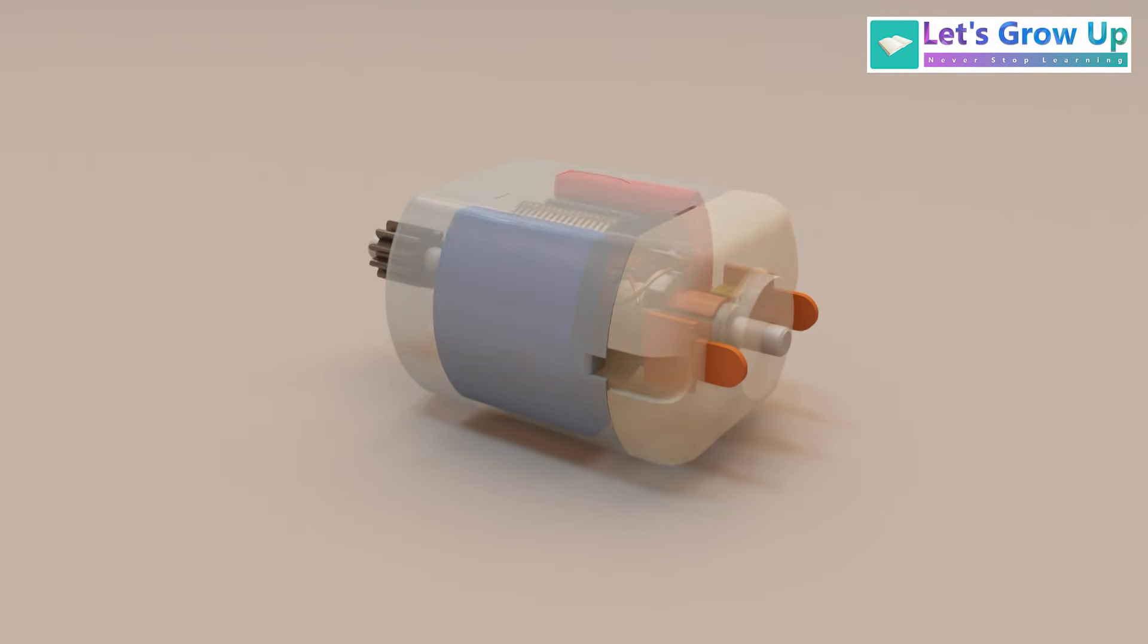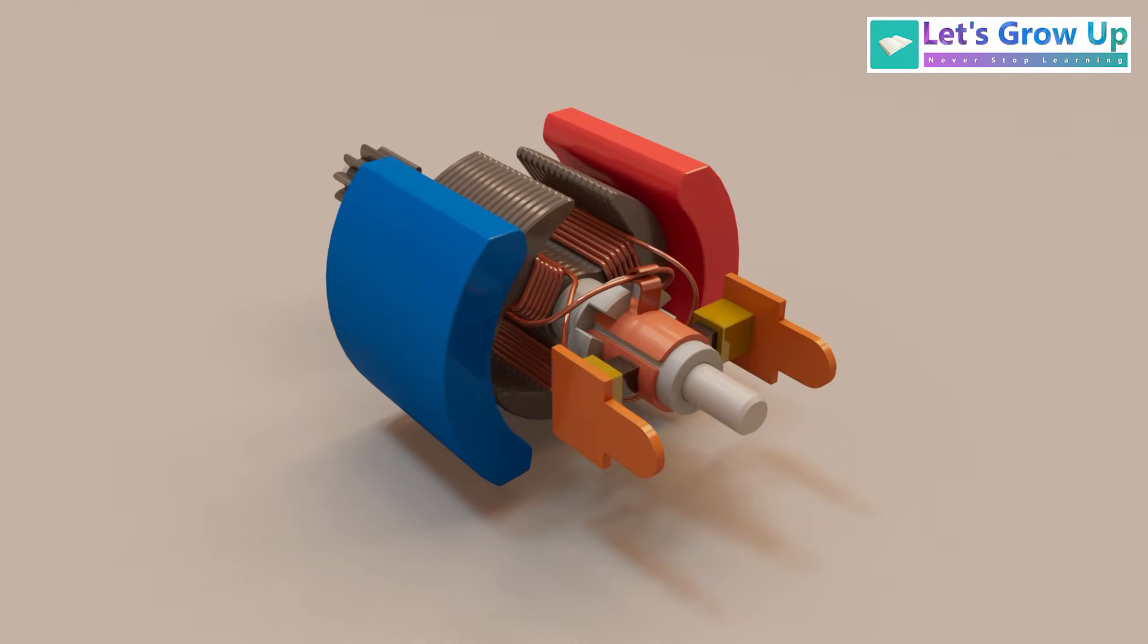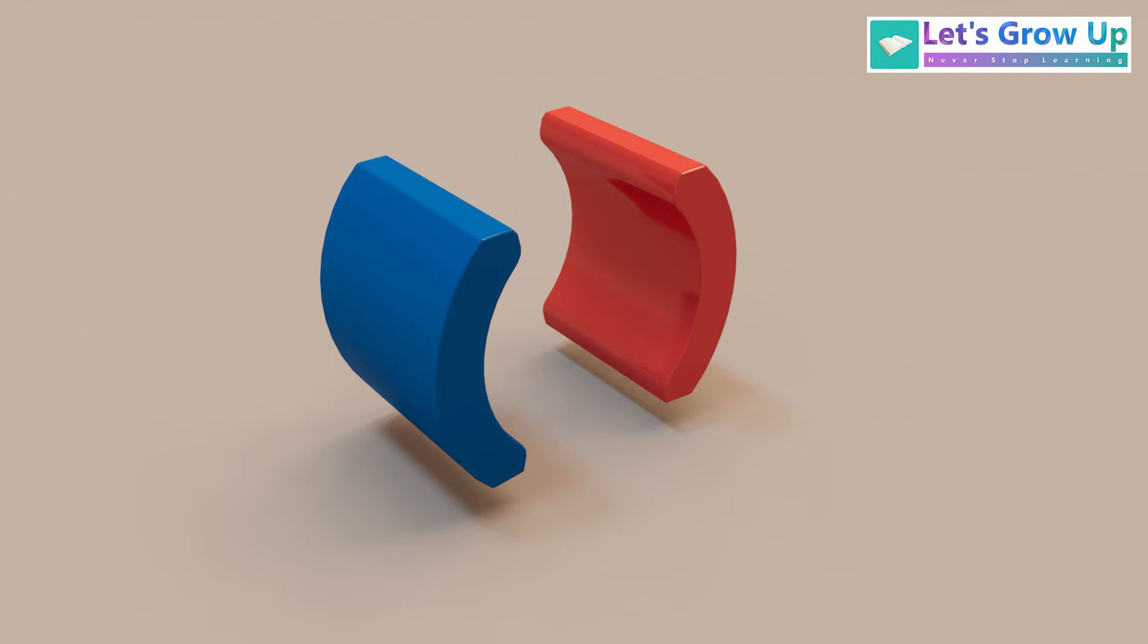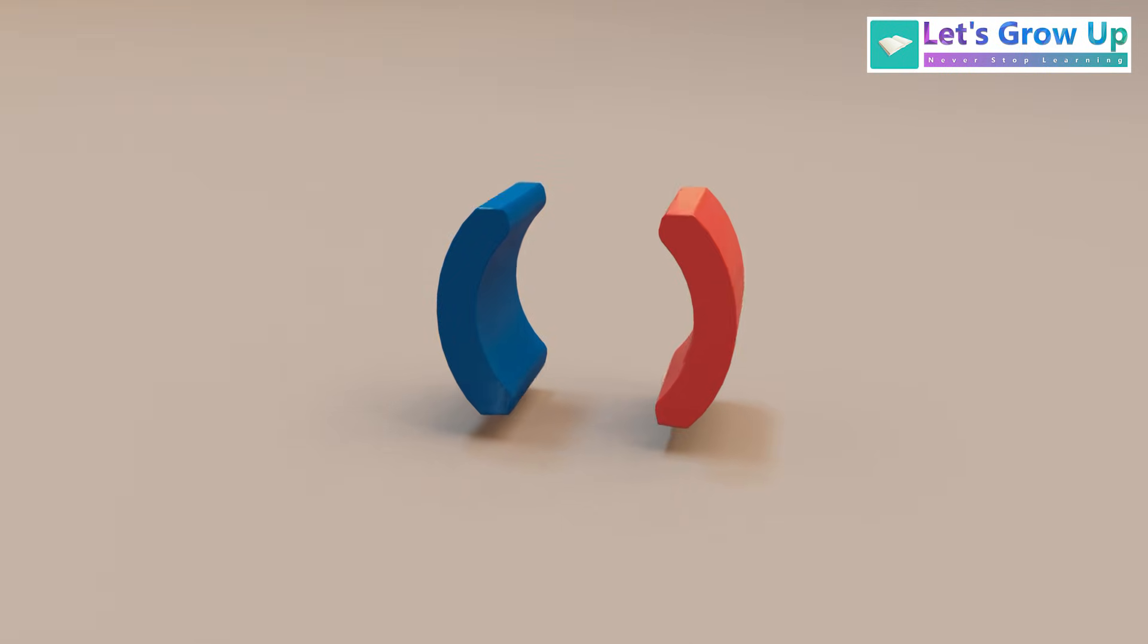If you open a DC motor, you will see these similar components. These are called stator magnets, which are permanent magnets. These permanent magnets are fixed in place and provide a constant magnetic field that interacts with the armature.